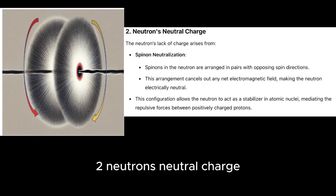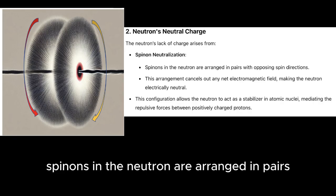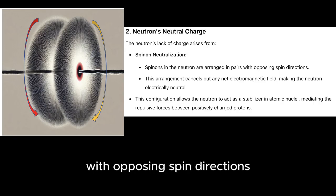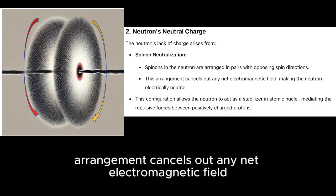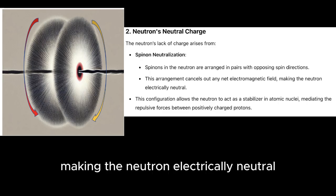Neutron's neutral charge. The neutron's lack of charge arises from spinon neutralization. Spinons in the neutron are arranged in pairs with opposing spin directions. This arrangement cancels out any net electromagnetic field, making the neutron electrically neutral.